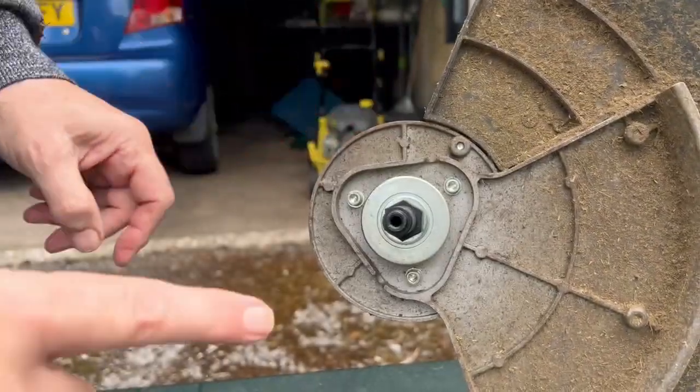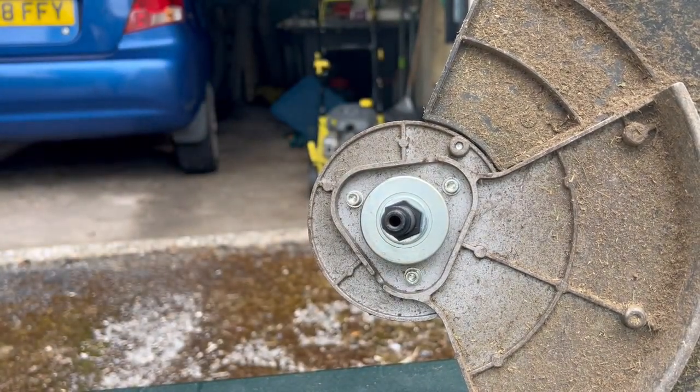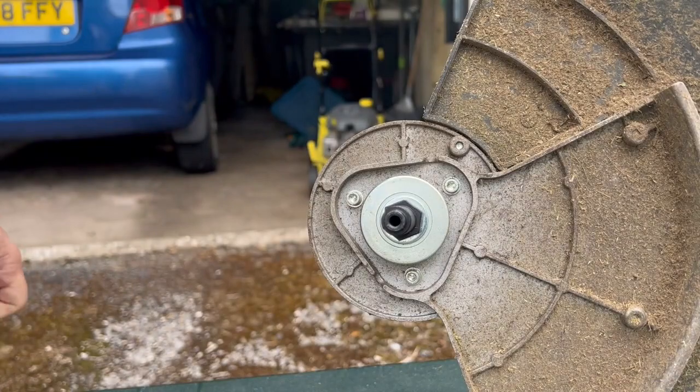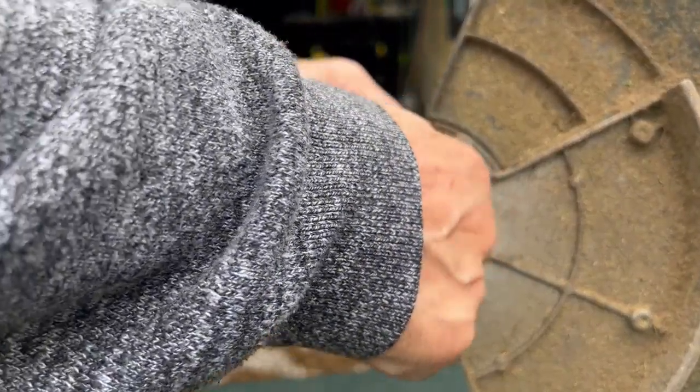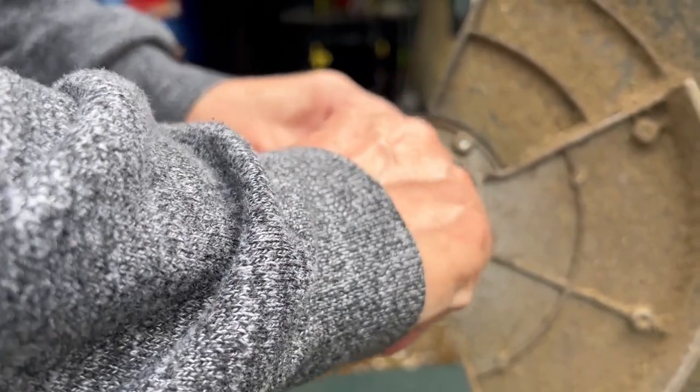And I'm left with this, which was originally part of the strimmer attachment and held the strimmer attachment on. But now it cannot be removed because the minute you try and remove it,